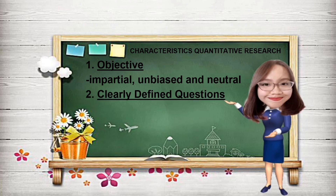Number 2: Clearly defined research questions. The researchers know in advance what they are looking for. Research questions are well-defined for which objective answers are sought. All aspects of the study are carefully designed before data are gathered.